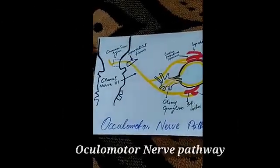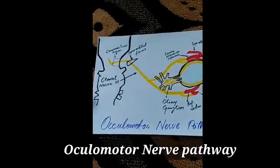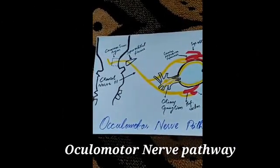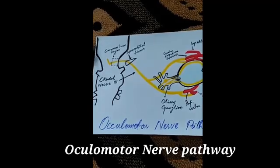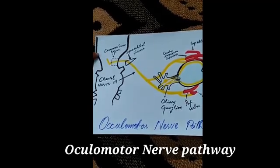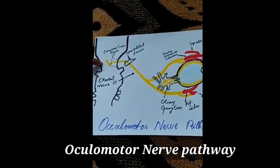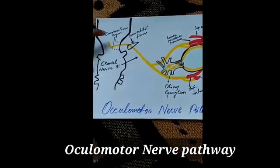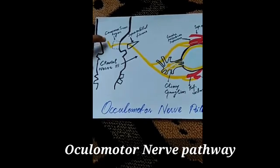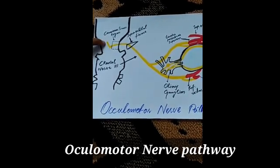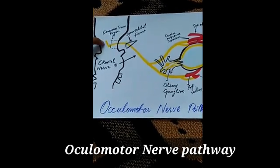This is the pons and this is the medulla oblongata. The connection between the pons and medulla is called the midbrain. In the tegmentum part of the midbrain, the nucleus of the oculomotor nerve is present.